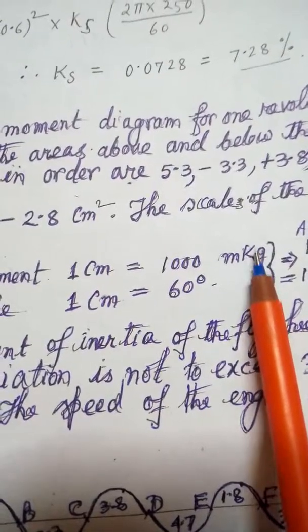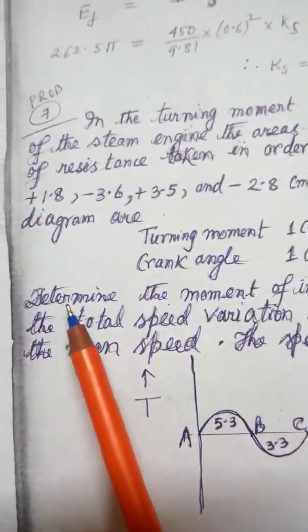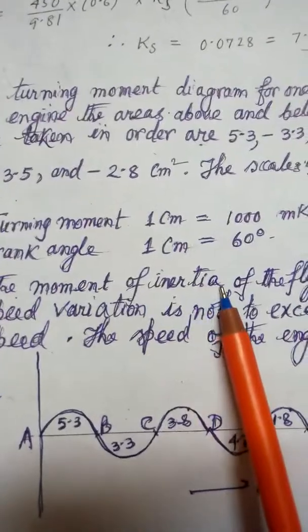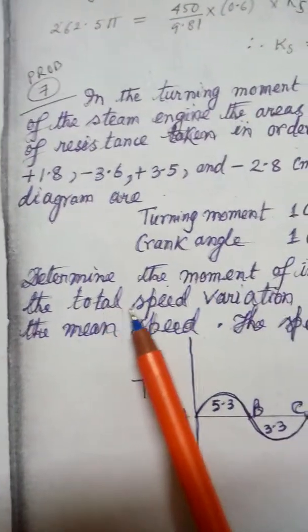Determine the moment of inertia of the flywheel if the total speed variation is not to exceed 3% of the mean speed.